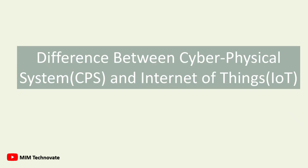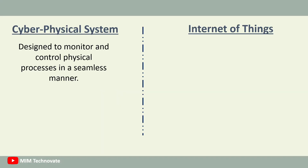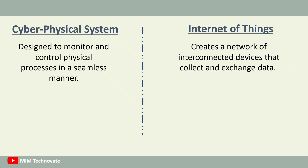Difference between cyber-physical system and Internet of Things. Cyber-physical system is designed to monitor and control physical processes in a seamless manner, whereas the Internet of Things creates a network of interconnected devices that collect and exchange data.